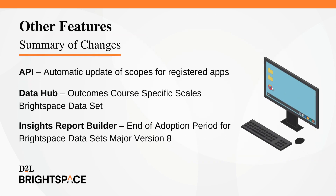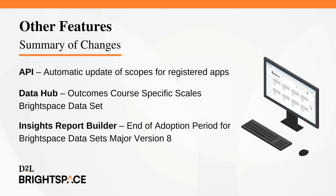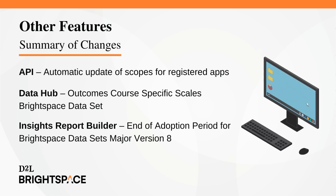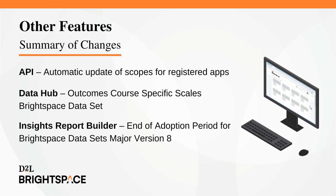Finally, let's take a look at the other features for this month's release. API: Automatic Update of Scopes for Registered Apps. DataHub: Outcomes Core Specific Scales Brightspace Dataset. And Insights Report Builder: End of Adoption Period for Brightspace Datasets Major Version 8.